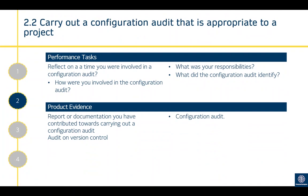Criterion 2.2 is to carry out a configuration audit appropriate to a project. That is ensuring all documentation is correct and fully up to date, the right quantities are tracked, locations and inventory are correct, and that processes for managing changes and requests are correct and the correct items are being used. Reflect on how you were involved in a configuration audit, what your responsibilities were, and what the audit identified. Product evidence would be a report or document contributing to a configuration audit, or audit and version control documents.